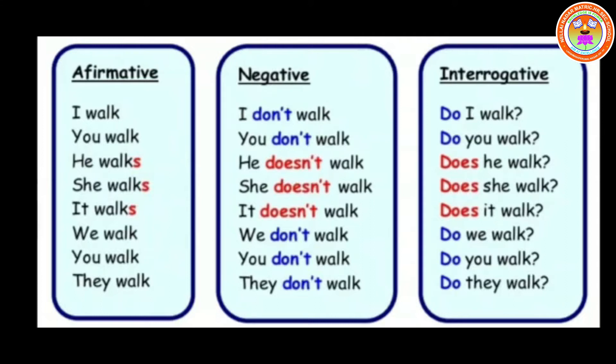I is first person, you is second person, he/she/it is third person singular. We is first person plural, you is second person plural, and they is third person plural — they walk. For the negative form, you write 'I don't walk' and the same goes on, but the verb doesn't change — it remains the same everywhere.